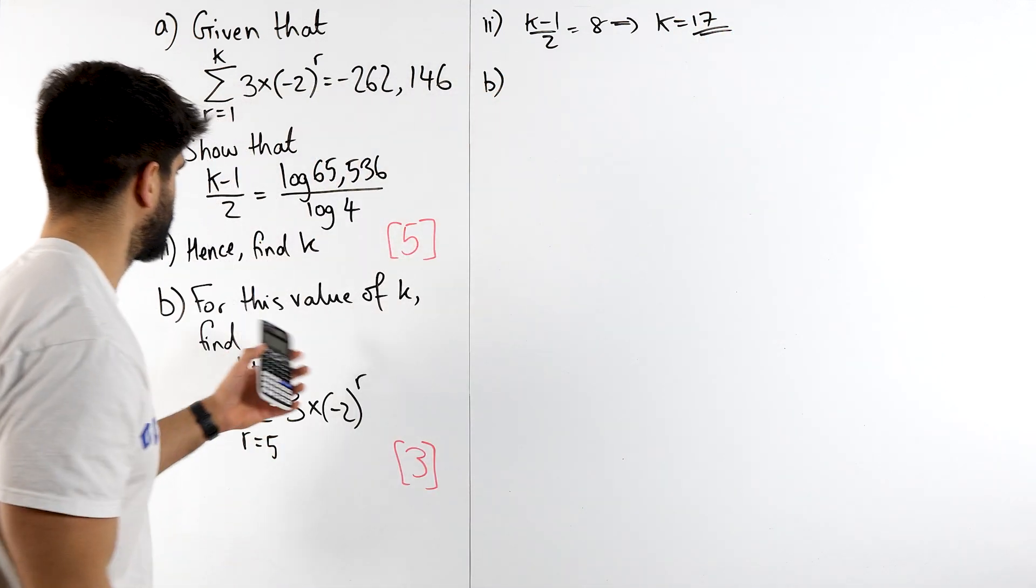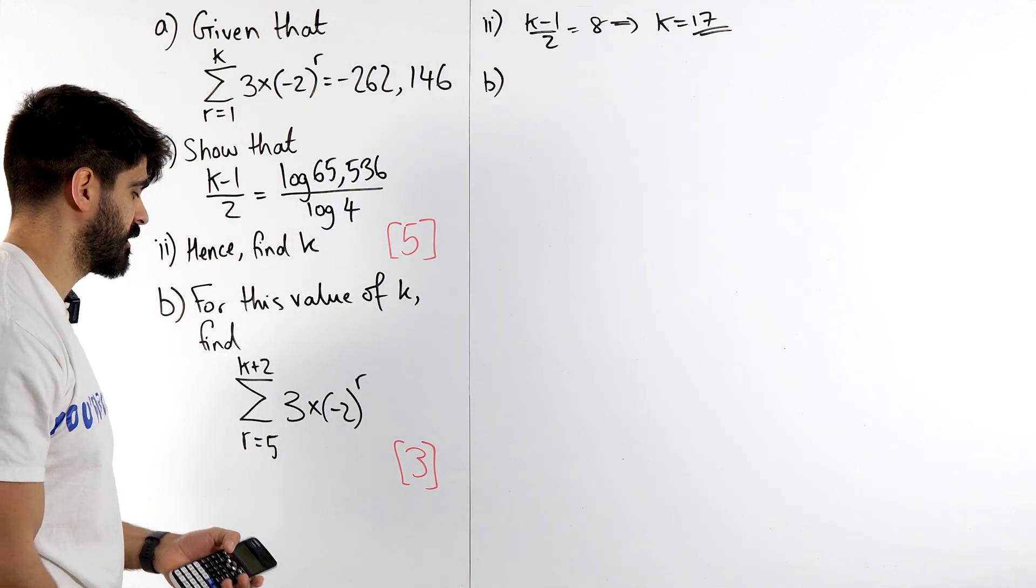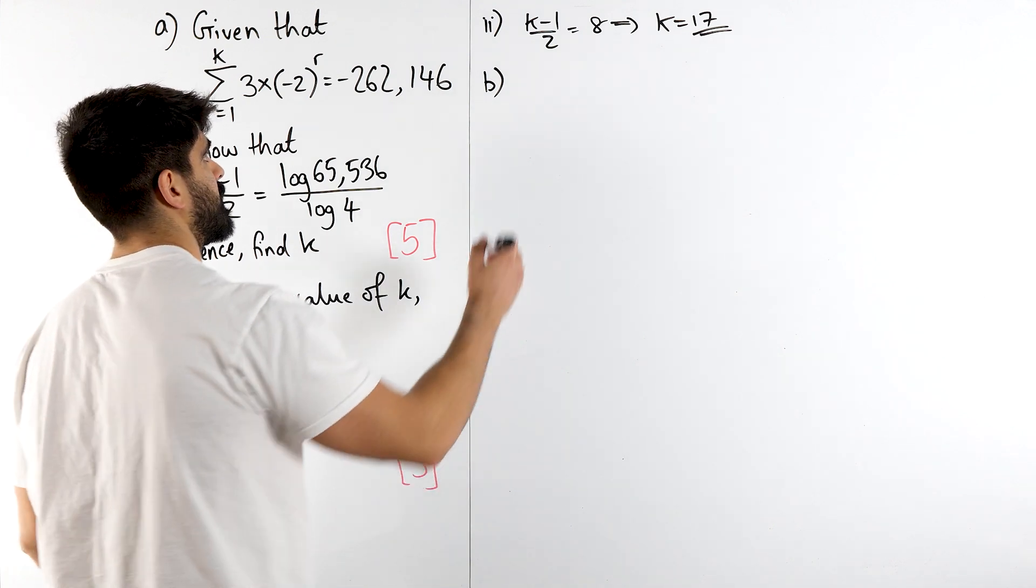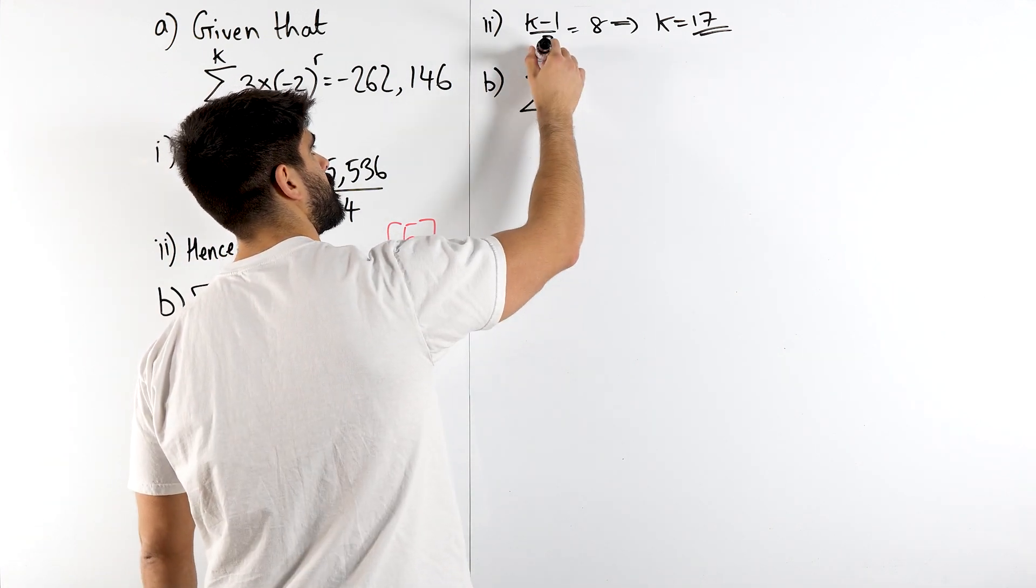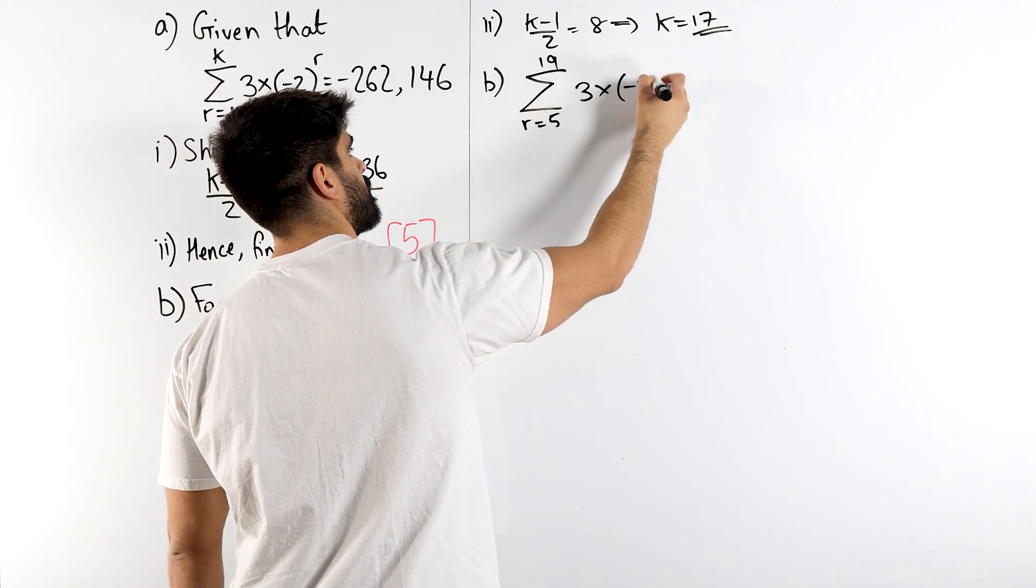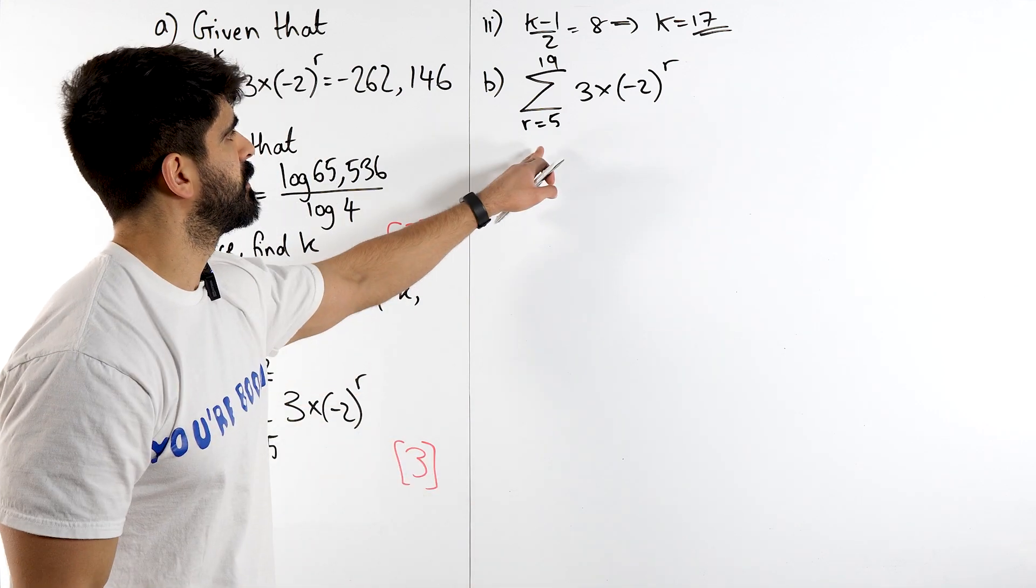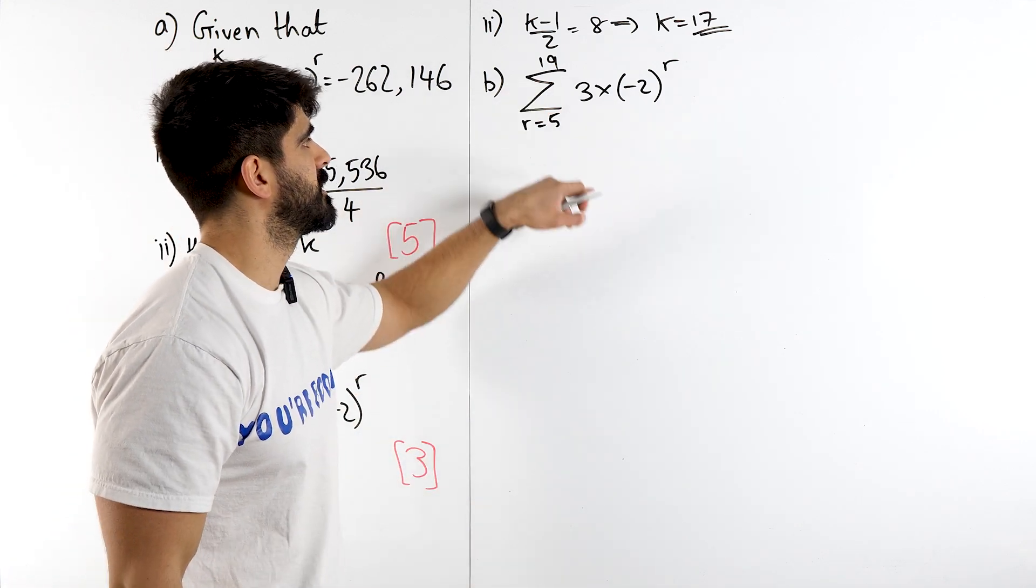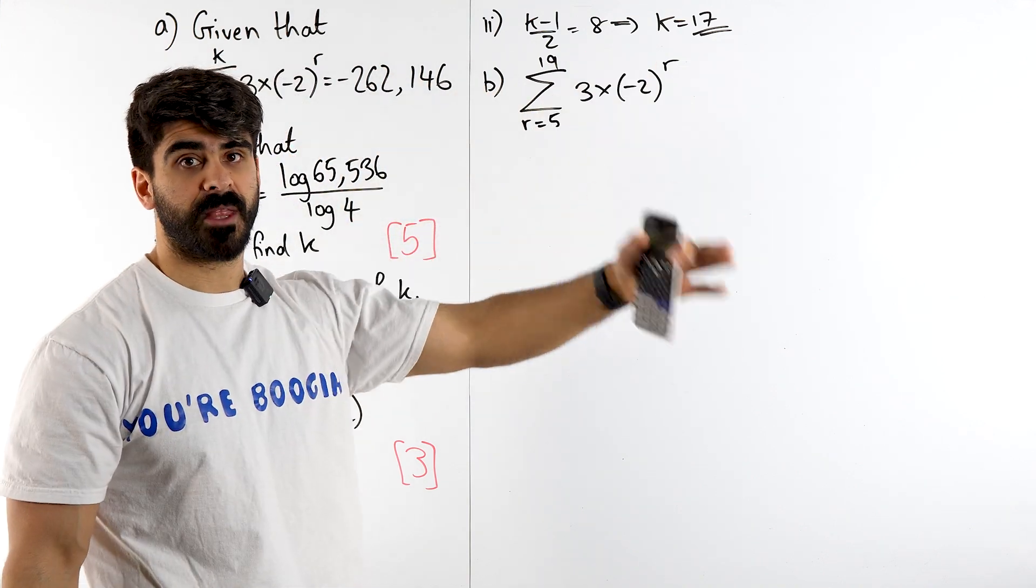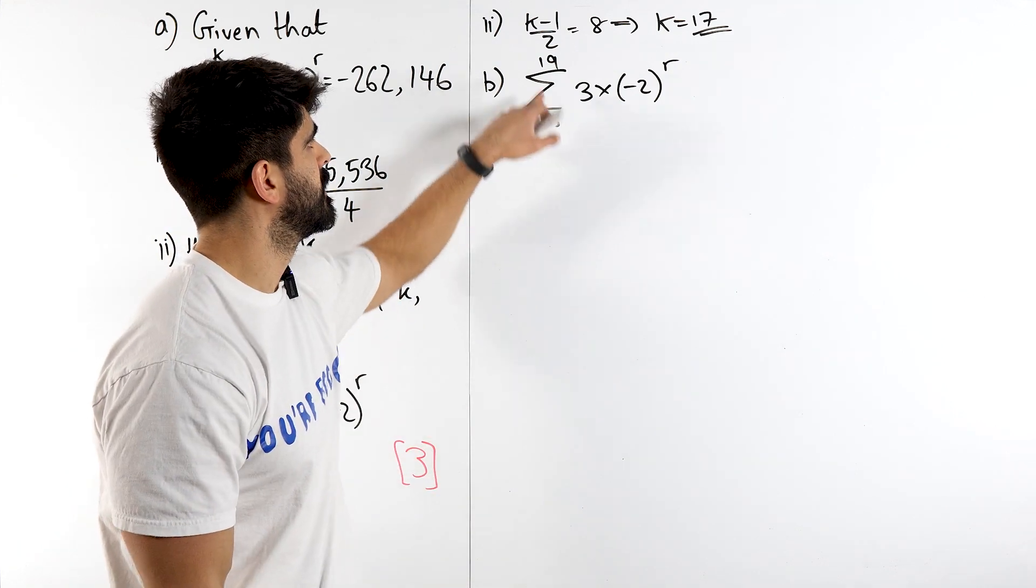And then part b. For this value of k, find this summation. Now remember this is a geometric sequence so we can use the geometric sum, but we have to be careful about what we're actually summing here. If k is 17, we're summing up to 19 from the fifth term. Now there's many ways you can do this. Further mathematicians would probably split this up and say I'm going to sum from 1 to 19 minus the sum from 1 to 4. I'm going to show you guys how you can do it without doing that. It's just in further maths we do a lot more algebraic summations rather than actual numbers.